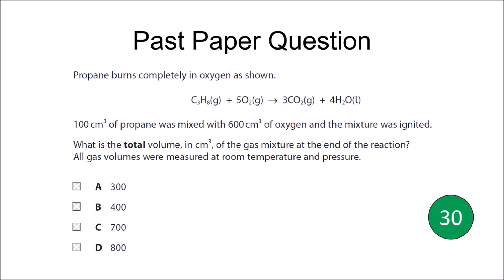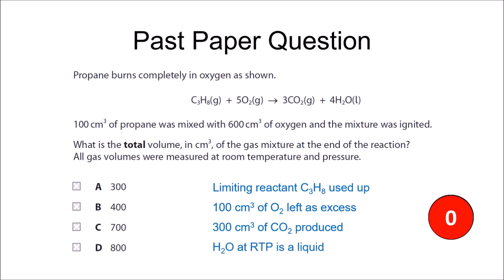Same again. 30 seconds starting now. Limiting reactant propane is used up. 100 cubic centimetres of oxygen are left as excess. 300 cubic centimetres of carbon dioxide are produced, and water at room temperature and pressure is a liquid, and therefore does not contribute to the total gas volume. The answer is B.